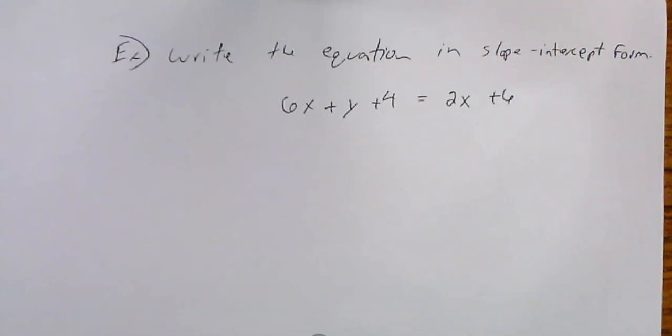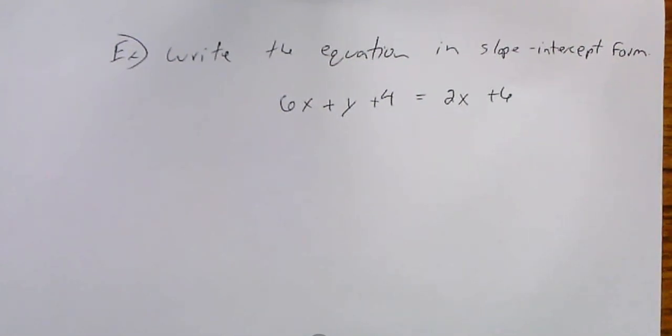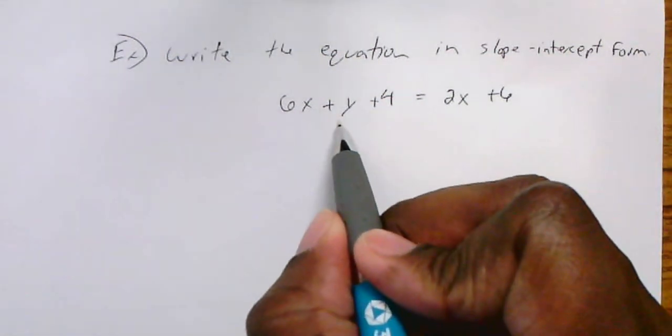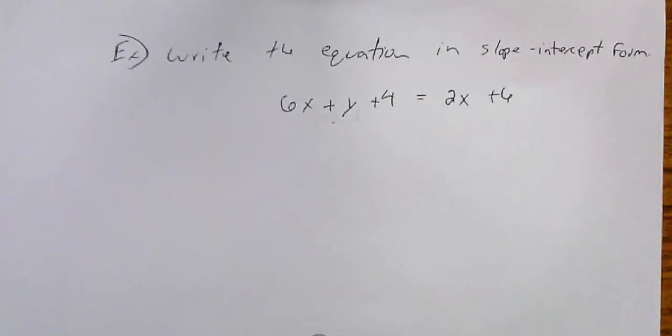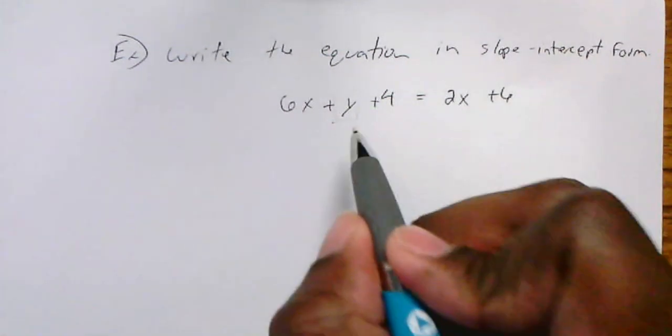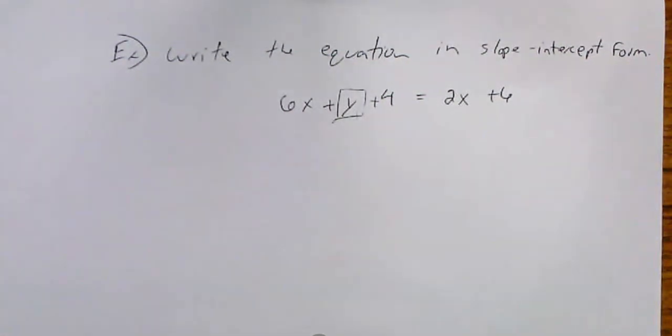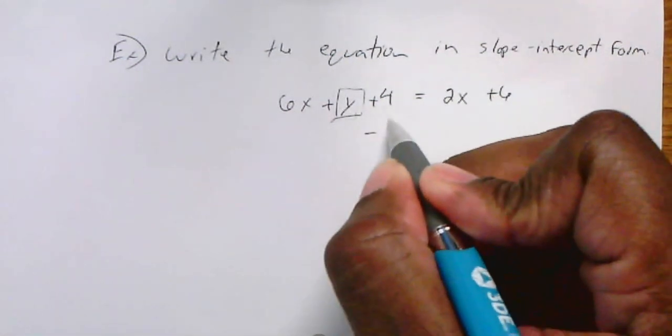I'll give you one last one. This example says write the equation in slope-intercept form. When I write that in slope-intercept form, I need to isolate this y so it's by itself. I need to move everything away from this y. I'm going to subtract 4 from both sides.